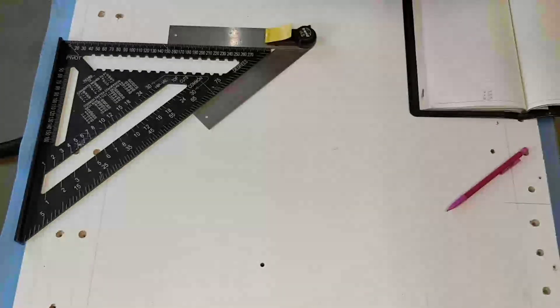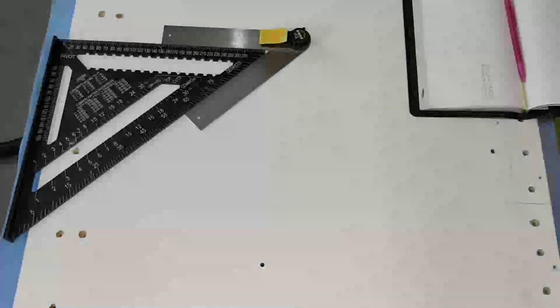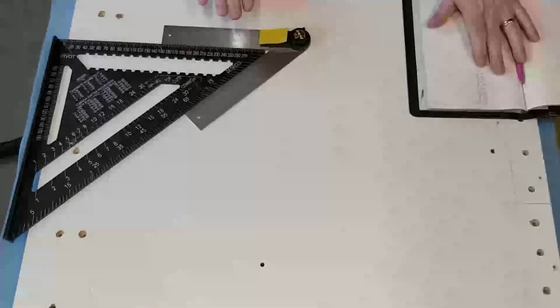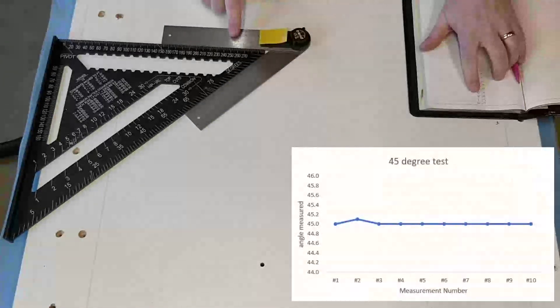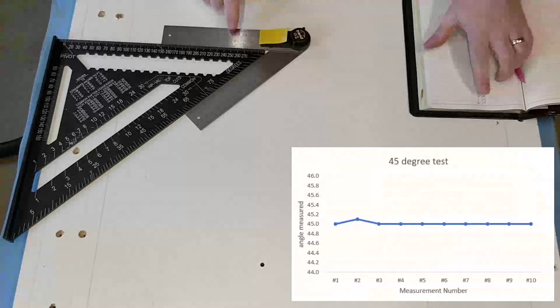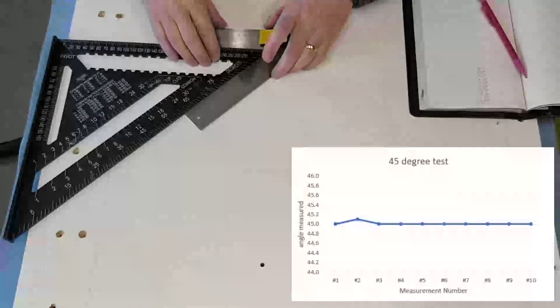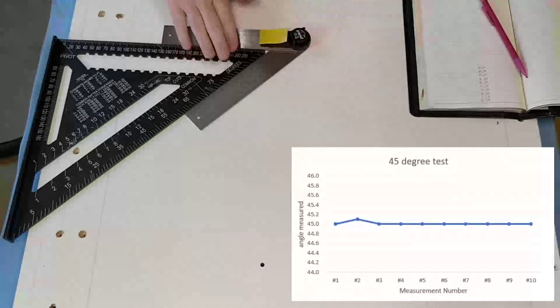I'll do 10 measures and then I'll do the next one. Okay, so those first measures all came out remarkably consistent with the exception of the second measurement which was 45.1. All of them came out at 45.0. So I'm really pleased with that. I think that shows that it's pretty accurate for 45 degrees.